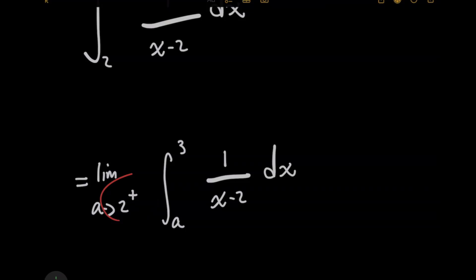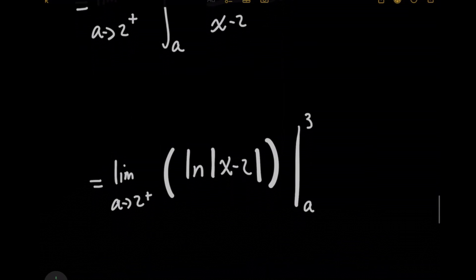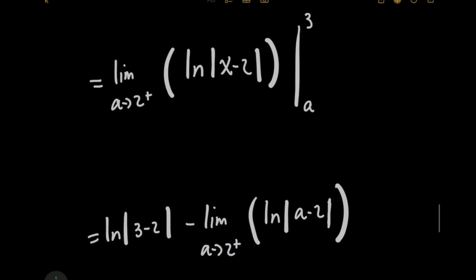So same idea, I'm going to evaluate this integral to get the natural log of the absolute value of x minus 2. And now when you plug in your upper limit of integration of 3, just like before, this left part is going to become a constant. And then for this right part, we need to see what this behavior is as we approach 2 from the right, this time using values like 2.0001, etc.